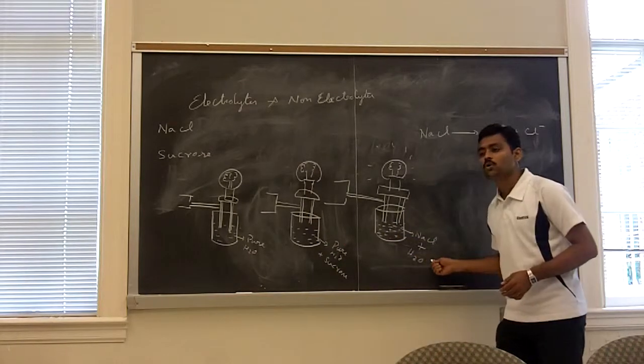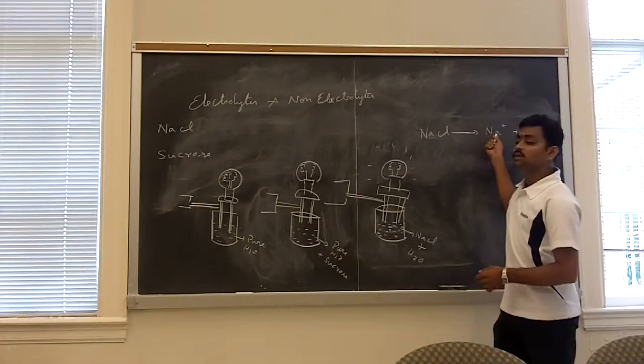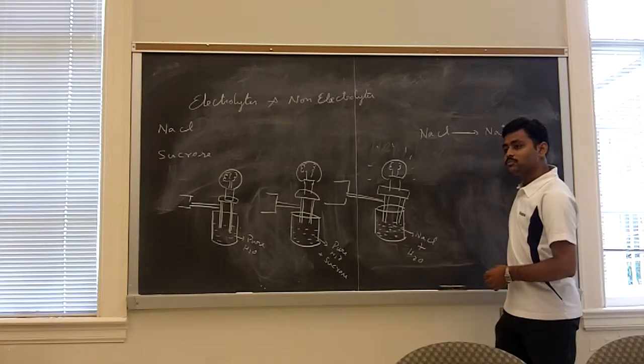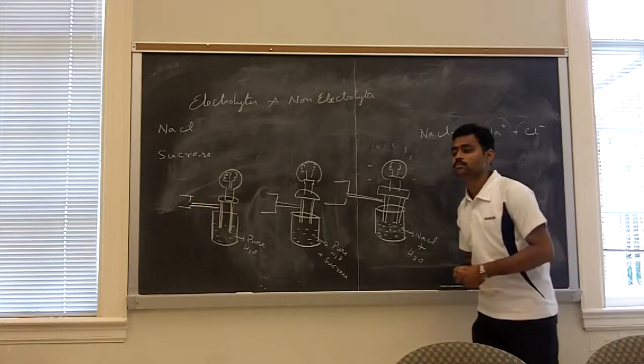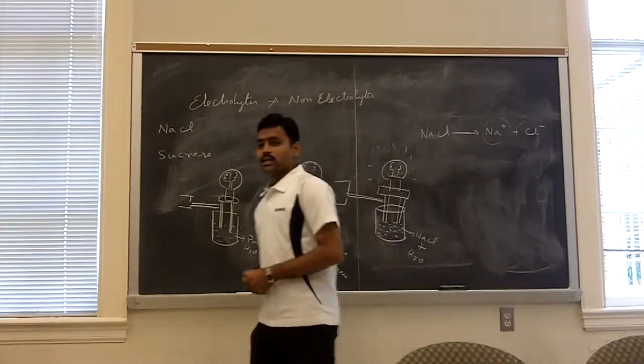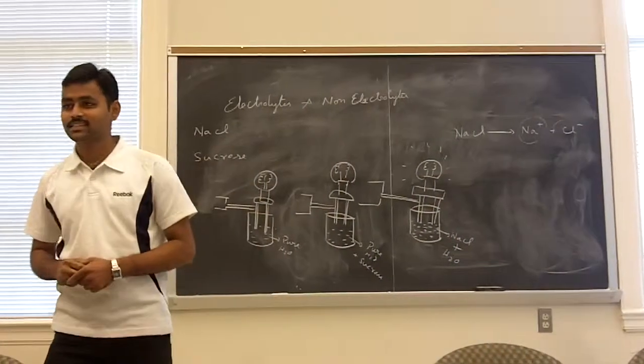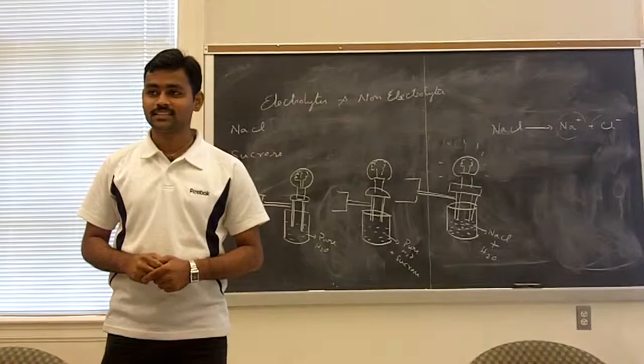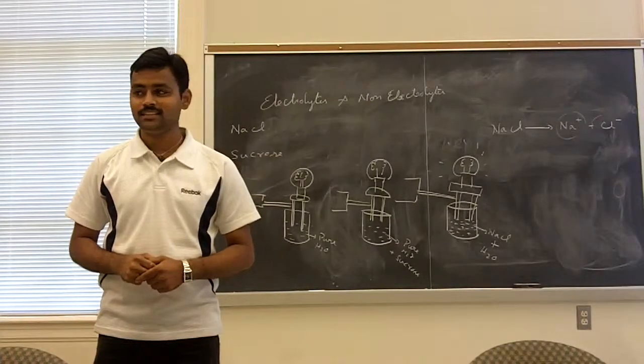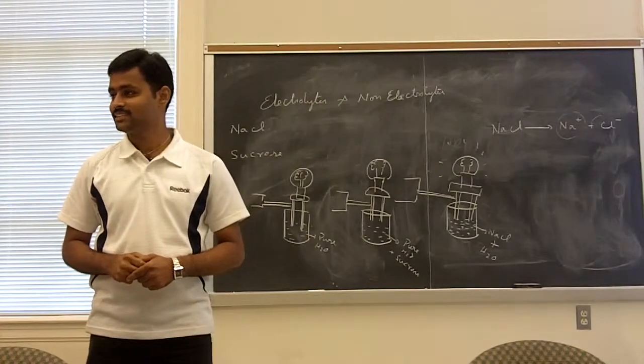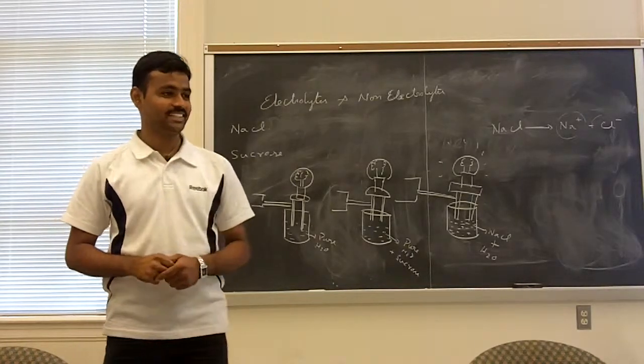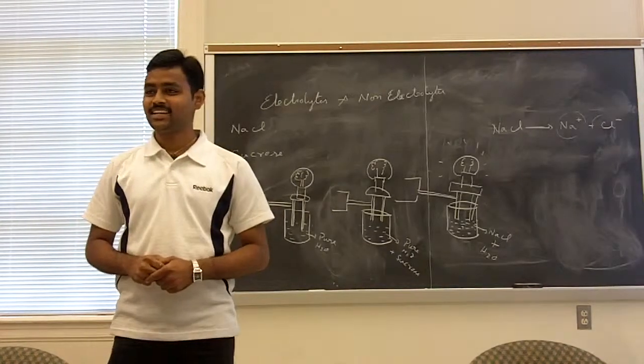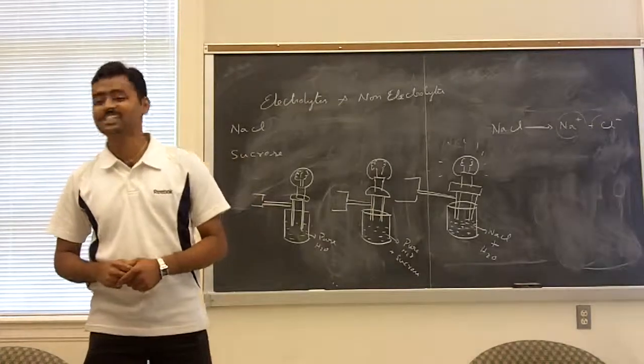That is the third case, sodium chloride produces cation and anion. Because of this ion, it glows the bulb. Right. Any questions? Okay. Thank you very much for listening.